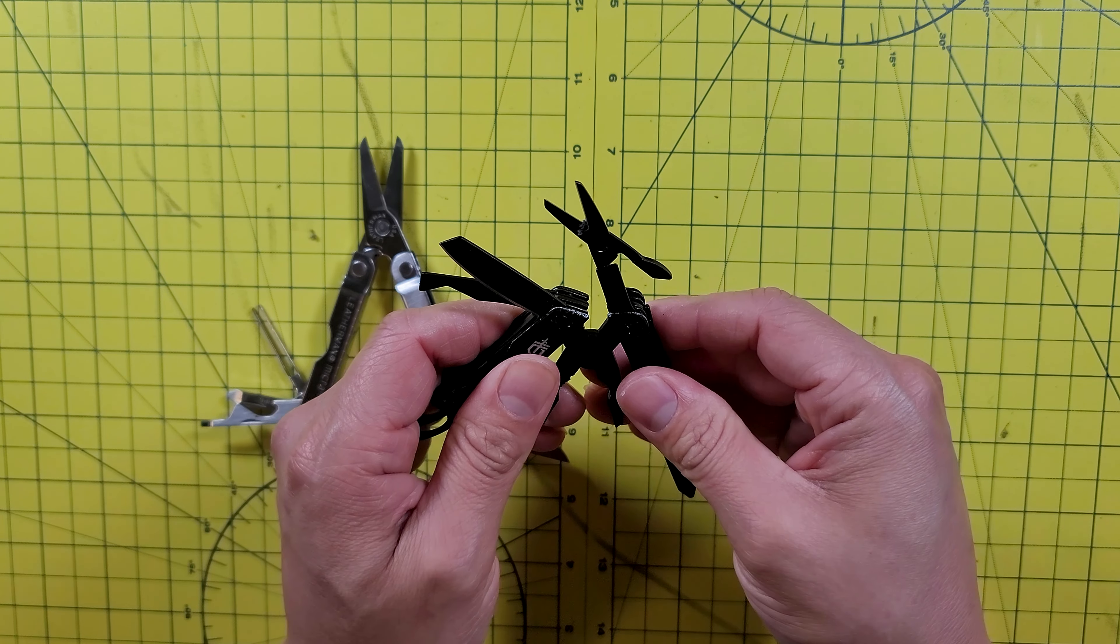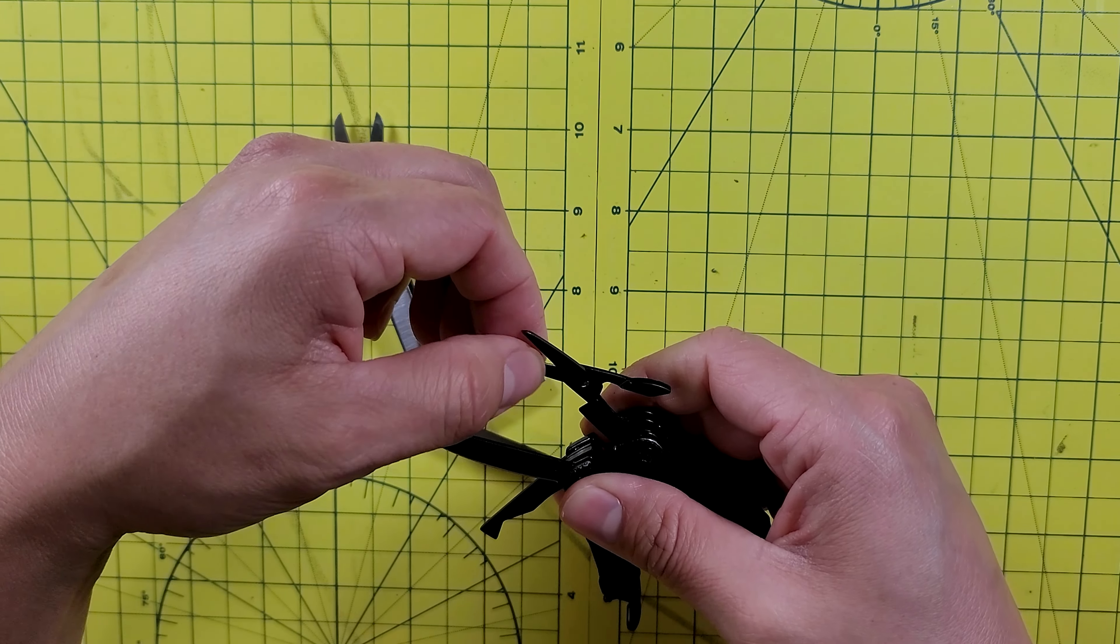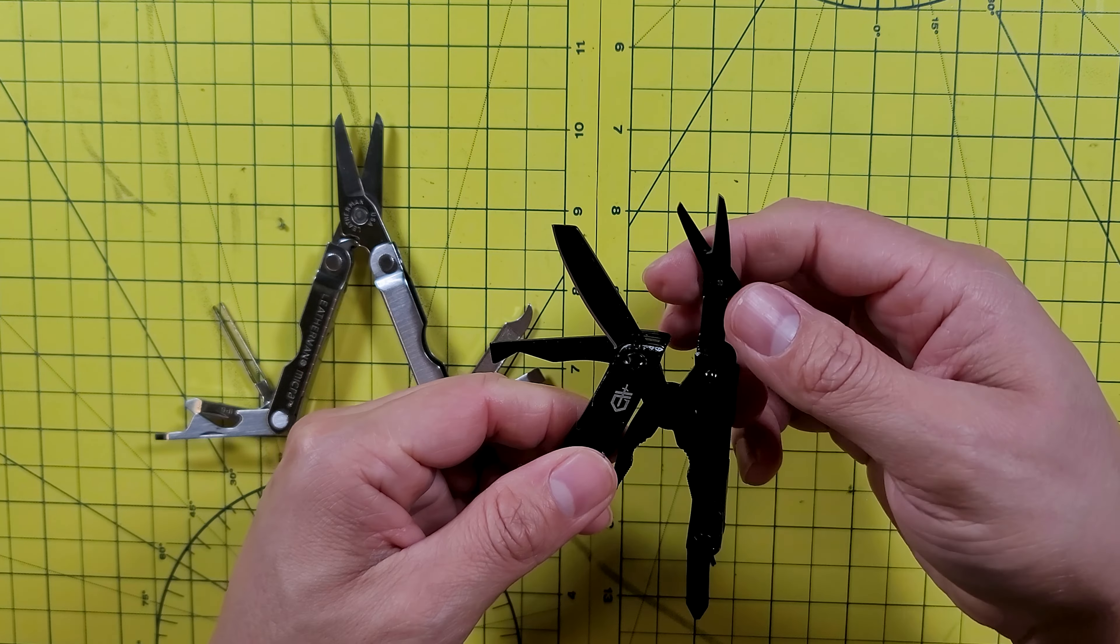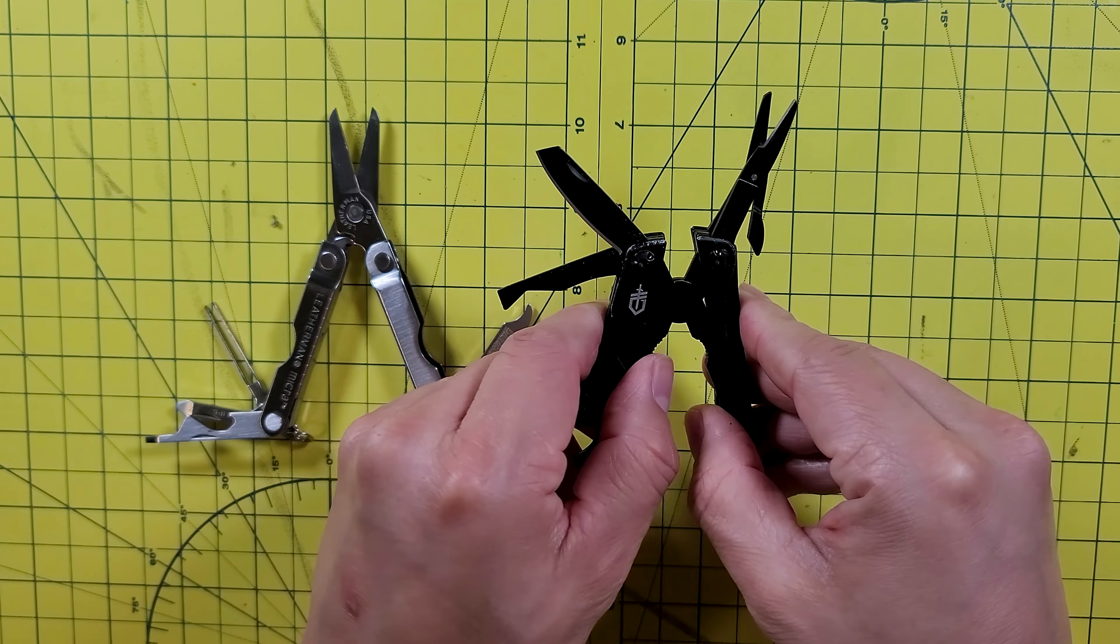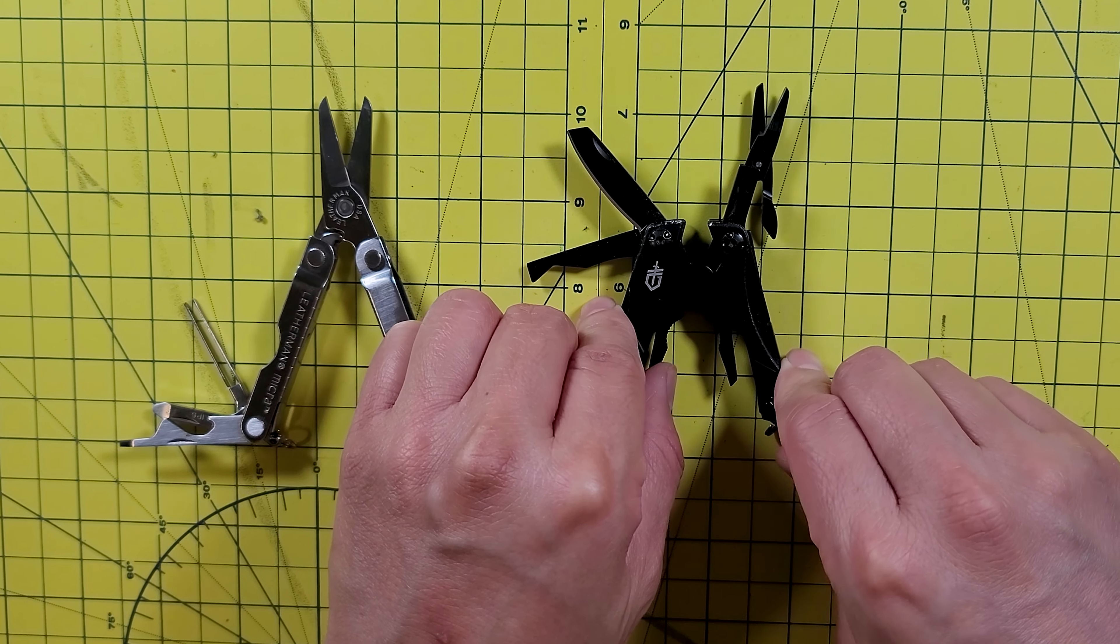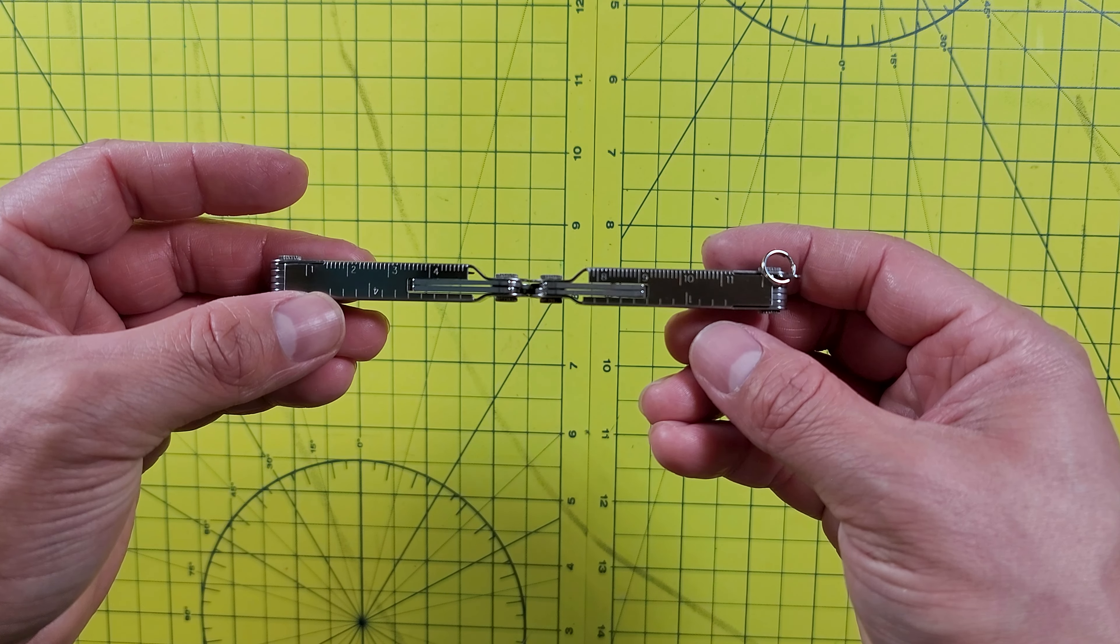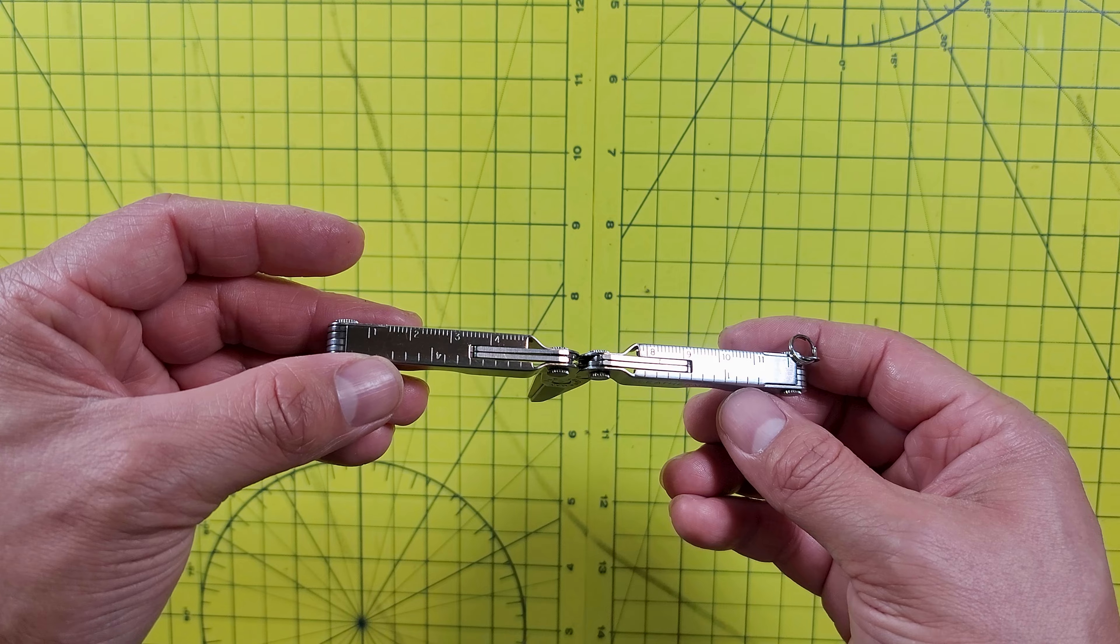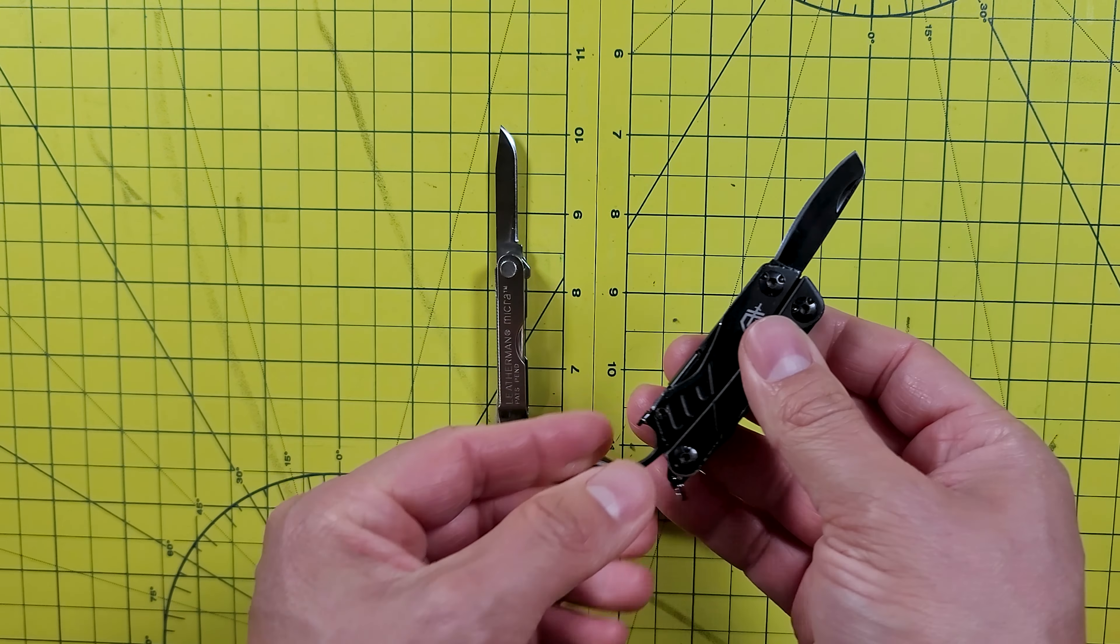I mentioned this on my last video of the Dime, that even though the Dime is a butterfly open multi-tool, you don't have to open it up to get to most of the tools, with the exception of the pliers or the wire cutters. Most of the tools are found on the exterior, unlike the Micro, which you must open in order to access the tools. The only tool you'll find outside of the Micro is the ruler. So because I don't have to open the Dime to take out the scissors or the knife, which are the most common tools I use, this makes the Dime more desirable.